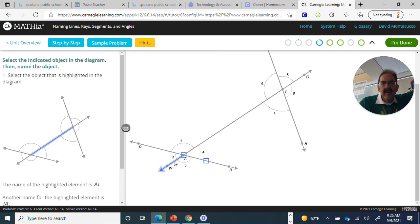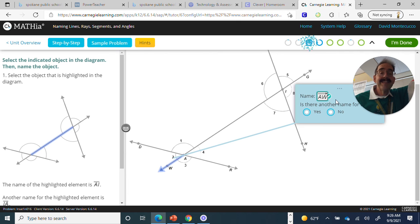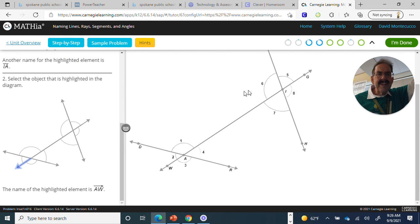Now we've got a ray here. AW. Now a ray, you have to have it in only one order. A towards the arrow. AW. So we've got a ray, AW. No, there is not another name for a ray. And most of the time they ask us two or three and that's it. So let's hit I'm done.